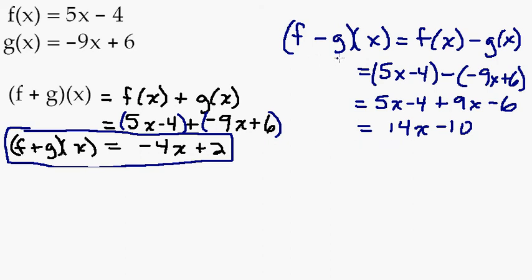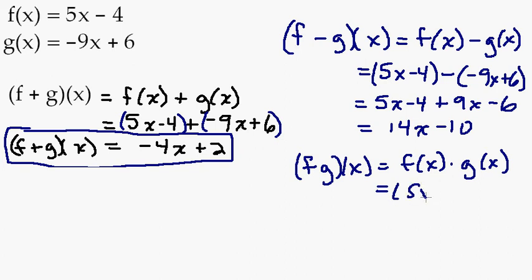So that would be your shortcut for finding f minus g of x. And you could do f times g of x. So to find that, you would just take f of x times g of x. So we would take 5x minus 4 times negative 9x plus 6.